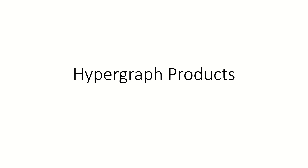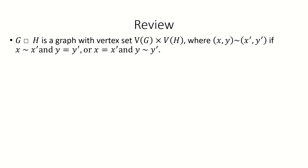Today we're going to look at a generalization of the graph Cartesian product to hypergraphs. To review, the Cartesian product of graphs G and H returns a graph with vertex set equal to the Cartesian product of the vertex sets of G and H, and in which a pair of vertices are adjacent if their left coordinates are the same vertex and their right coordinates are adjacent, or if their left coordinates are adjacent and their right coordinates are the same vertex.